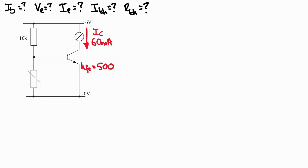In this task we're given information about the current flowing through the lamp which is 60 milliamps, and that current is the collector current for the transistor. We're also told that the transistor has a gain HFE of 500.